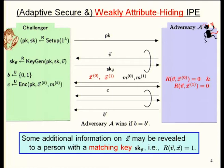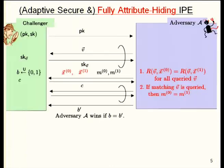From this definition, some additional unnecessary information on the attribute may be revealed to a person with a matching key. From a practical and theoretical view, this is not desirable, so we consider a stronger version of attribute-hiding security. In this stronger security game, the important point is that the adversary can ask for both types of keys — matching (decryptable) keys or non-matching keys. Of course, if the adversary asks for a matching key, they can decrypt the challenge ciphertext.